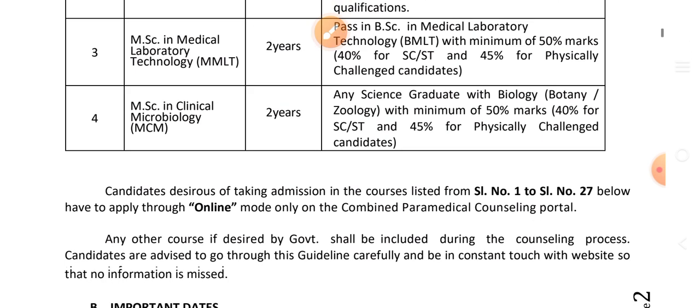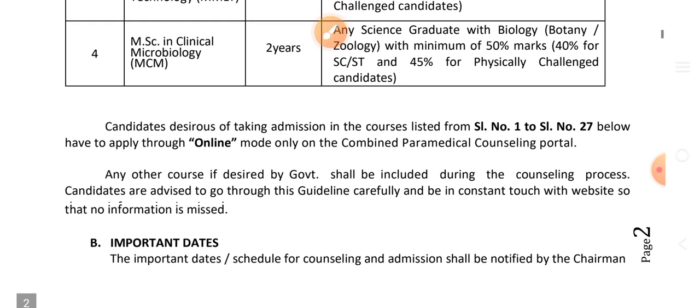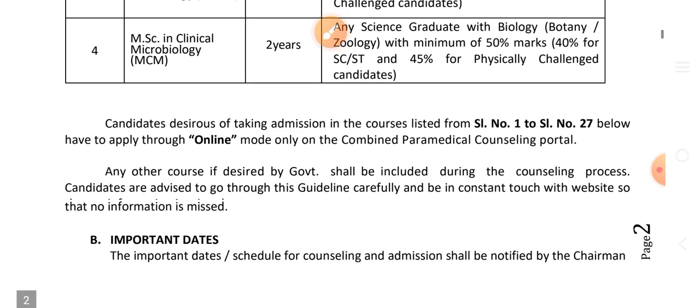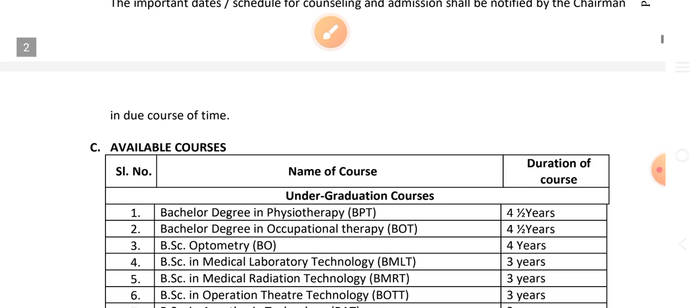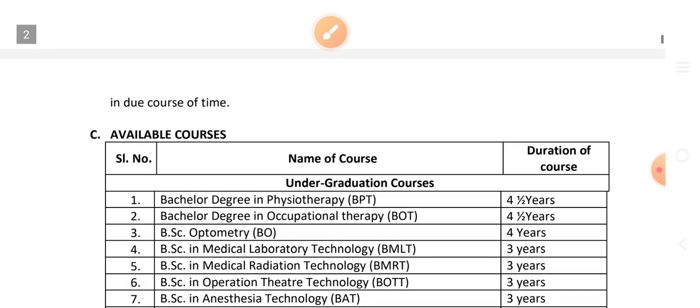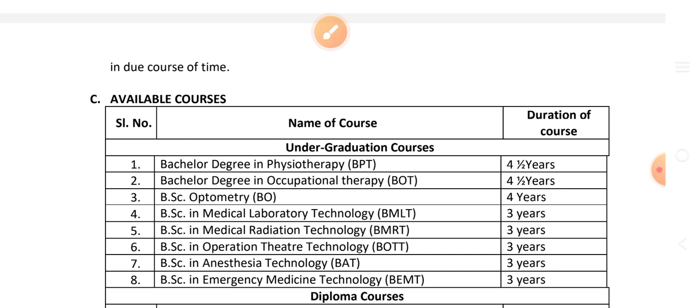There are 27 courses listed. How to apply is through online mode. Important dates will also be mentioned. There are both postgraduate and undergraduate courses covered.